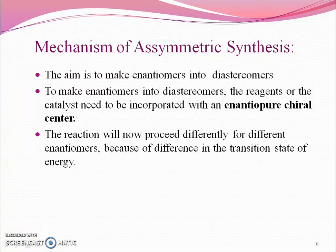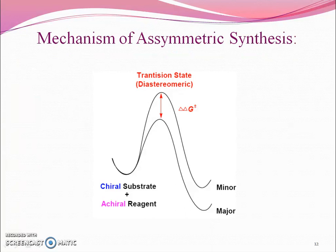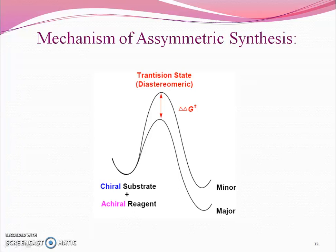Mechanism of Asymmetric Synthesis. The aim is to convert enantiomers into diastereomers. To make enantiomers into diastereomers, the reagents or catalyst need to be incorporated with an enantiomeric chiral center. The reaction will then proceed differently for different enantiomers because of the difference in the transition state energy (Delta G). When reacting a chiral substrate with an achiral reagent, it results in a major product and a minor one — the more stable transition state gives the major product, the less stable gives the minor product.